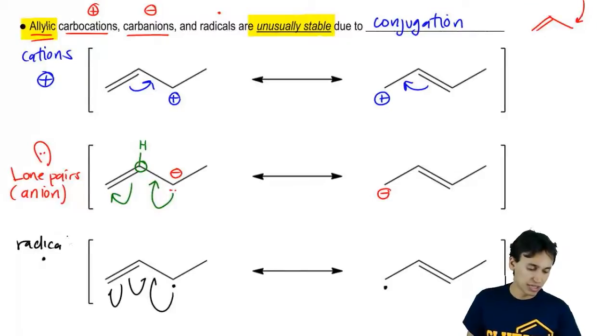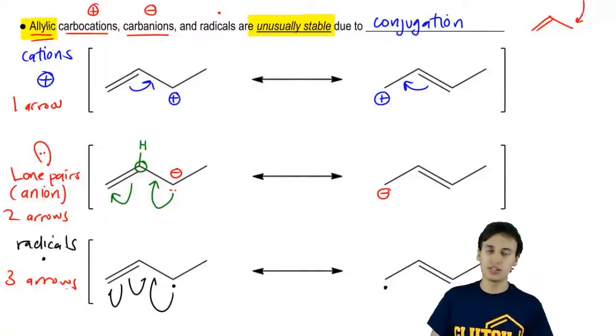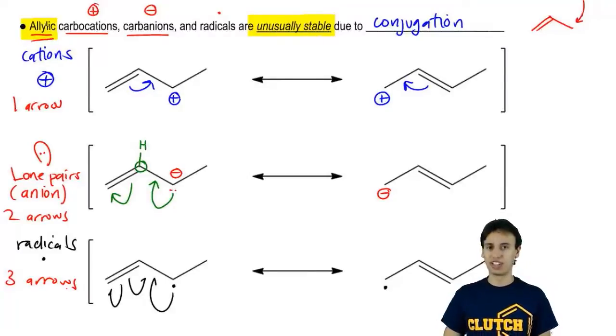As you can see, maybe this is a nice little pattern but we've got one arrow, two arrows, and three arrows. These are just ways to think about and categorize these resonance structures. Resonance structures are something you're still going to have to do for the rest of organic chemistry so you have to kind of stay on your toes about that. That's it for this topic. So let's move on.